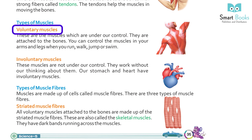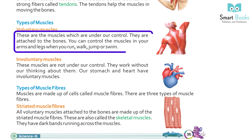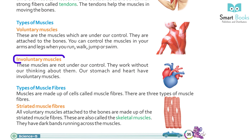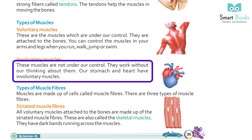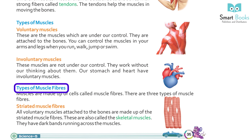Types of muscles: voluntary muscles are the muscles which are under our control. They are attached to the bones. You can control the muscles in your arms and legs when you run, walk, jump, or swim. Involuntary muscles are not under our control. They work without our thinking about them. Our stomach and heart have involuntary muscles.